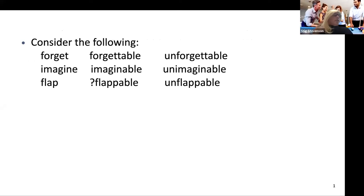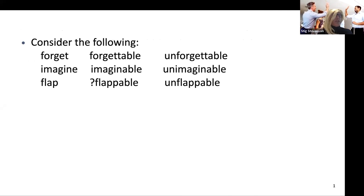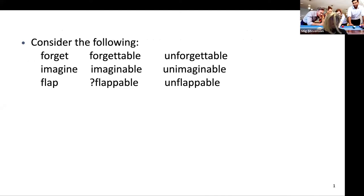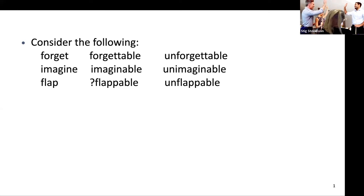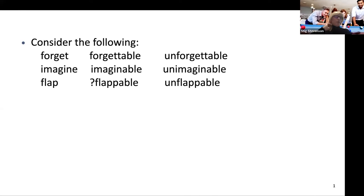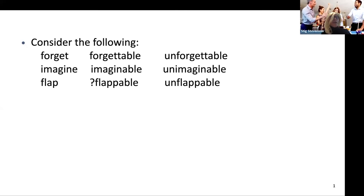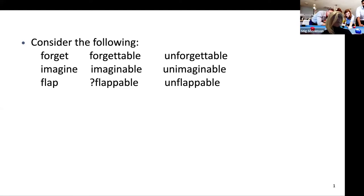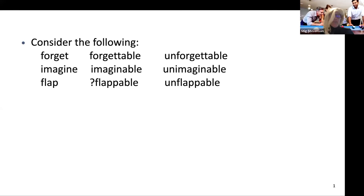Until recently, developmental progression in morphoencabulation had been largely hamstrung by a dogged over-reliance on antiquated notions like the morpheme. And as you all know, morpheme-based accounts of derivation rest on idealised one-to-one form-to-meaning mappings, which have difficulty accounting for such things as stem alternations, zero morphs, empty morphs, and cumulative exponents — all of which pose problems for an item-and-arrangement model of derivation.